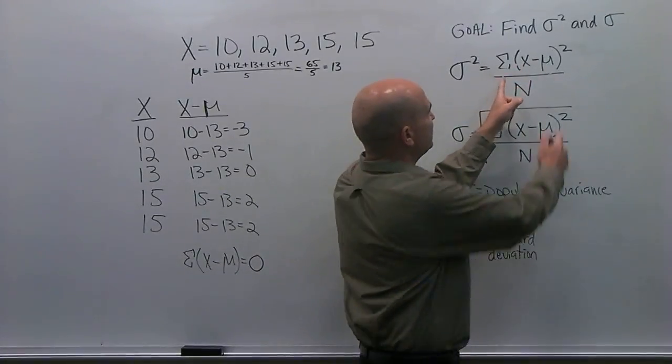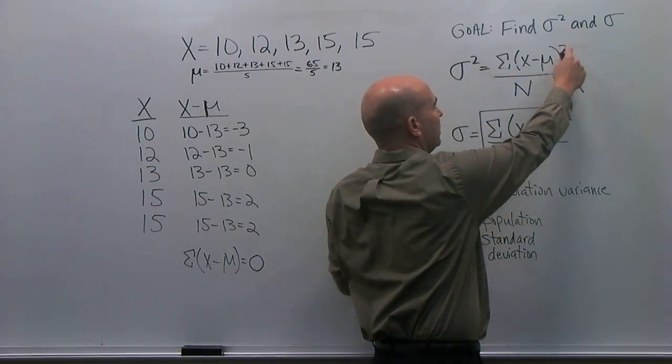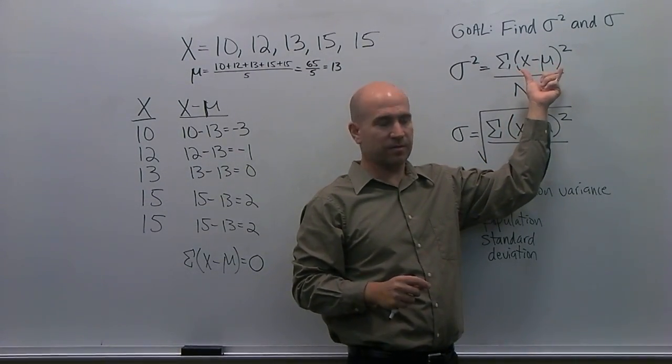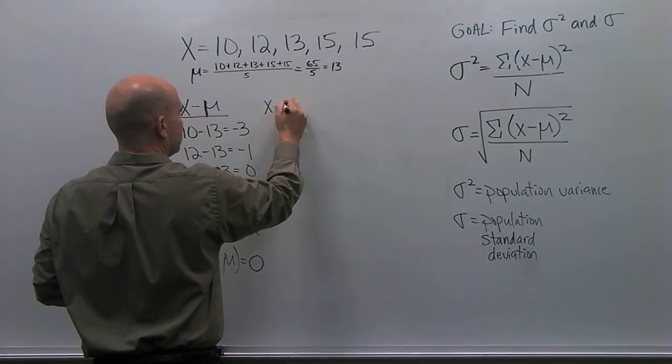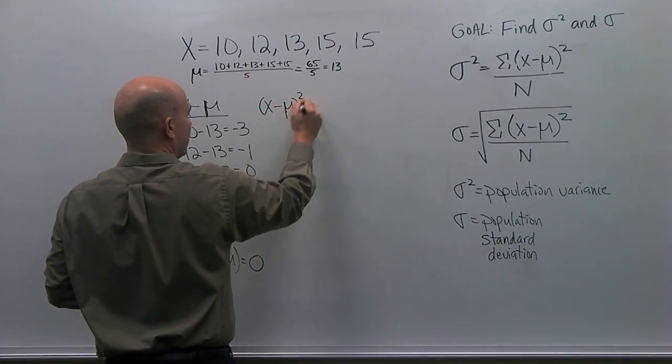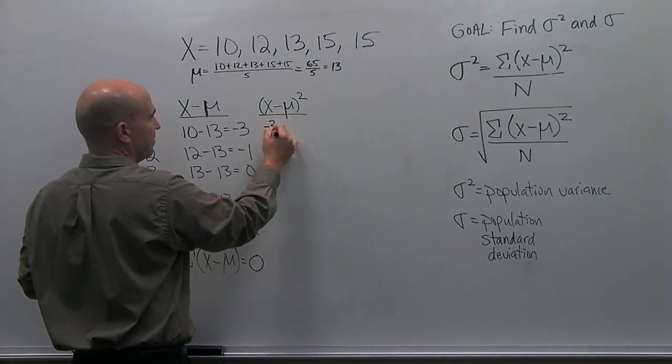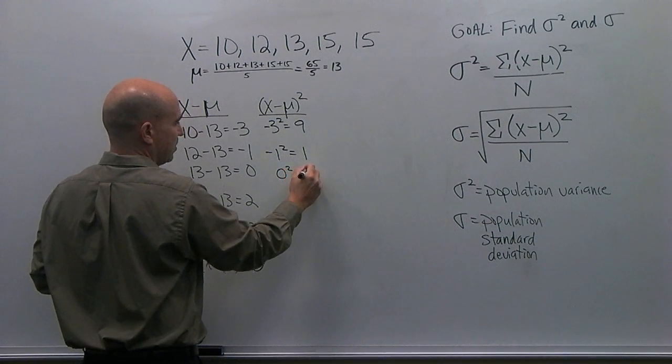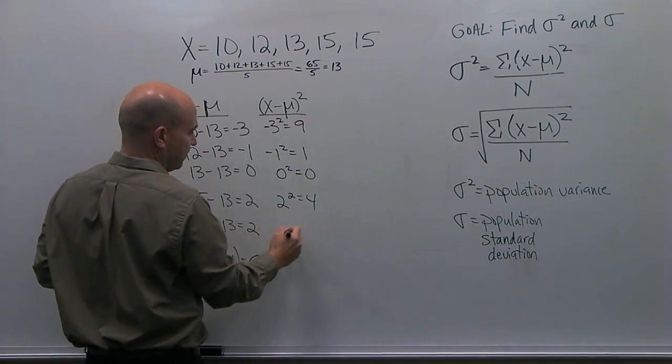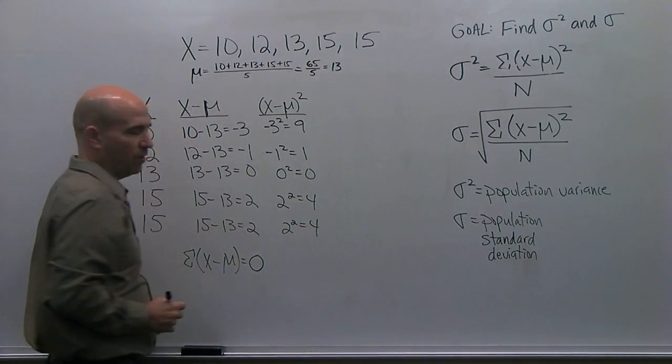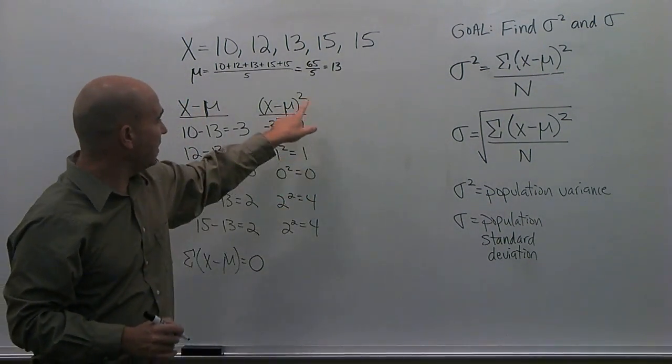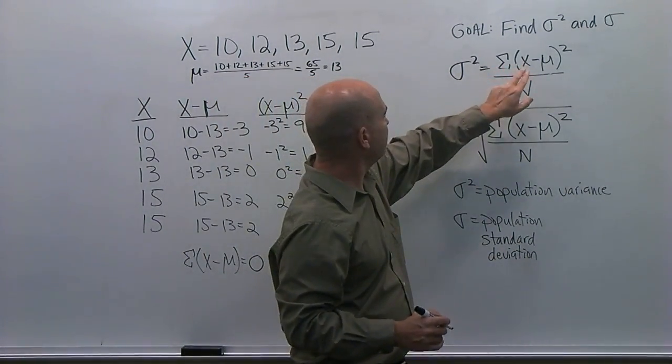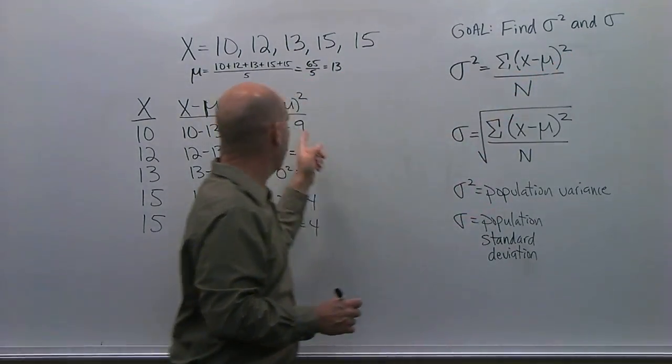Next, we've completed this part of our formula, x minus μ. Now, next we want to square each of those deviation scores. So, here we're going to make a column x minus μ squared. And then we'll just take these values, negative 3 squared equals 9, negative 1 squared equals 1, 0 squared equals 0, 2 squared equals 4, and 2 squared equals 4. Now, what I've done there, once again, I've squared the deviation scores. So I've found the deviation scores, and now I've squared them, that's what these are.